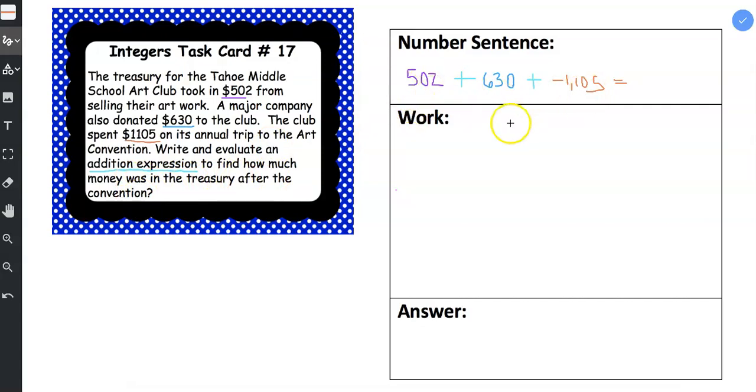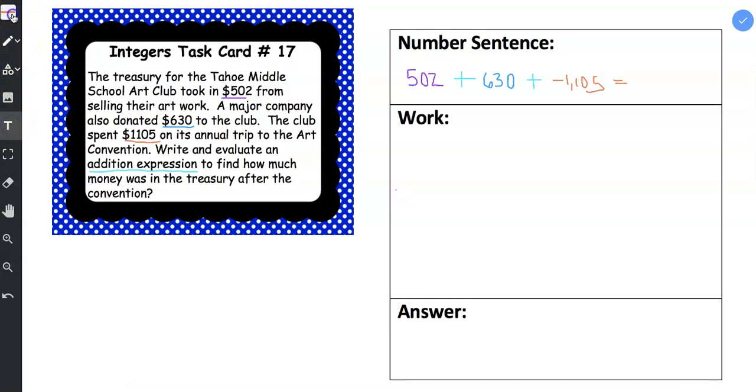So after all of these things, what was the final amount of money in the account, in the treasury? So I'm going to type our problems. So we have $502 plus $630 plus negative $1,105.